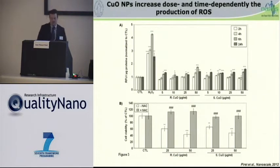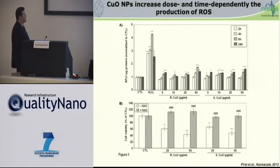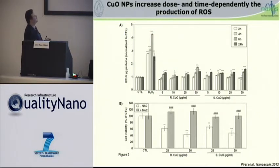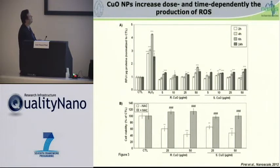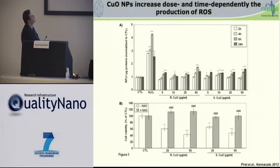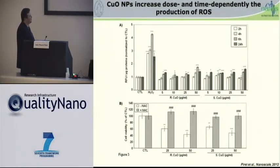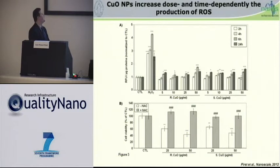Next, we wanted to determine whether these nanoparticles could have a pro-oxidant effect, so we measured the production of reactive oxygen species. We observed a dose-dependent and time-dependent increase in ROS production. No production of ROS was observed after two hours of incubation, but we detected an overproduction between four and six hours, after penetration of copper oxide. When we used the antioxidant N-acetylcysteine, we were able to drastically reduce the cytotoxic effect, suggesting that oxidative stress plays an important role in cytotoxicity.